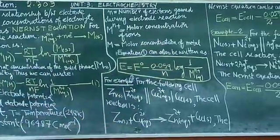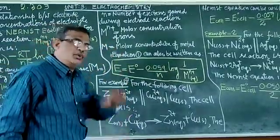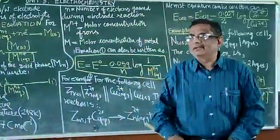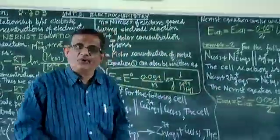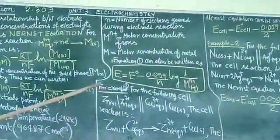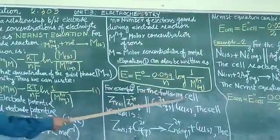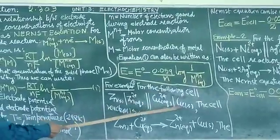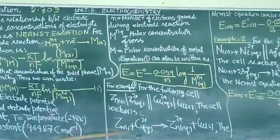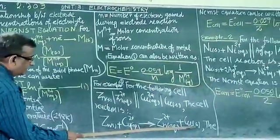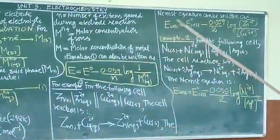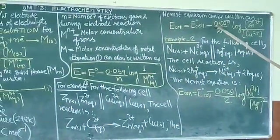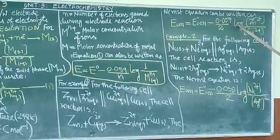Now to understand the equation we can have two examples. Let us consider the Daniell cell reaction: Zn + CuSO4 giving you Zn + Cu. The cell is Zn(s) | Zn2+ || Cu2+ | Cu(s). For this the Nernst equation is calculated as: E_cell = E°_cell - (0.059/2) log([Zn2+]/[Cu2+]).